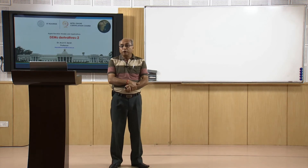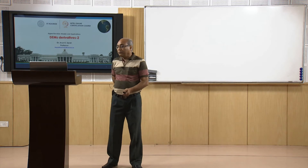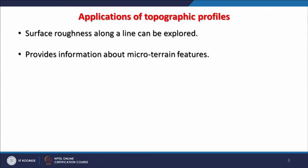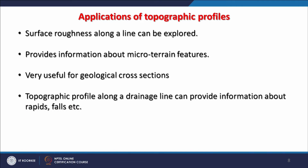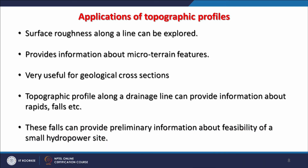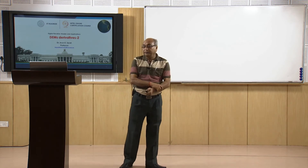Applications of topographic profiles include exploring surface roughness along a line, providing information about micro terrain features, and drawing geological cross-sections in structural geology — which can now be done along arbitrary lines rather than just straight lines. A topographic profile along a drainage line can provide information about rapids and falls, and these profiles can provide preliminary information about the feasibility of small hydro sites — whether a fall or head is available.